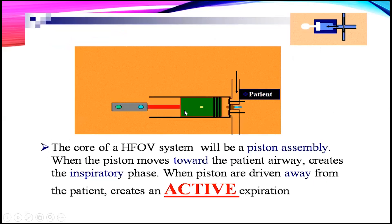The core of the HFOV system is the piston assembly. The airway flow entering the patient is connected to a piston. When this piston moves in and out of the airway, it pushes air into the airways and pulls air out, producing active inspiration and active exhalation. The piston moves very rapidly, creating oscillation around the mean airway pressure, creating active inspiration and active expiration. This active expiration allows for very high rates of piston movement.